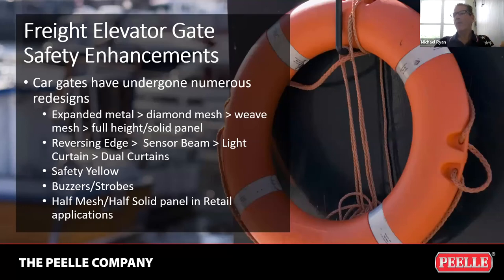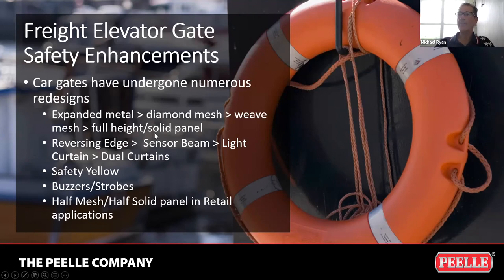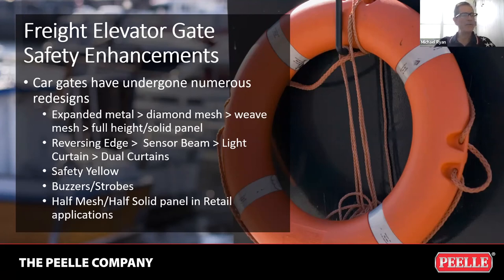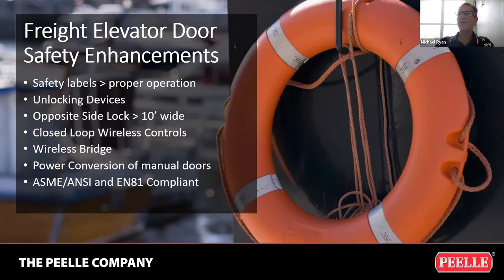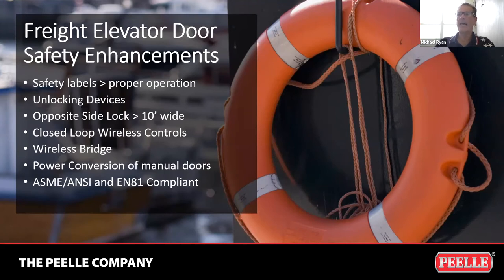Something often asked is what have you done to make things safe? You saw the safety presentation. In addition to looking at all those hazard zones, over the years car gates have gone from expanded metal to a mesh, to a weaved mesh, to sometimes full-height solid panel. We already talked about the reversing edge, to a sensor beam, to a light curtain, to dual curtains. Sometimes making the gate yellow, buzzers, strobes, sometimes the gate is half mesh and half solid — because the gate closes in advance of the door, trying to keep people safe inside the car. We've also done labels, double locking, wireless controllers, and power operating manual doors. Our stuff not only complies with code here but also the code in Europe.